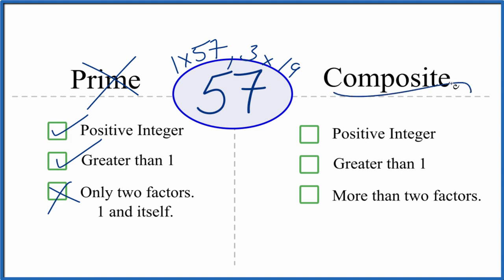But is it a composite number? Because it's a positive integer, it's greater than 1. And there are more than two factors. 1, 2, 3, 4 factors that divide evenly into 57.